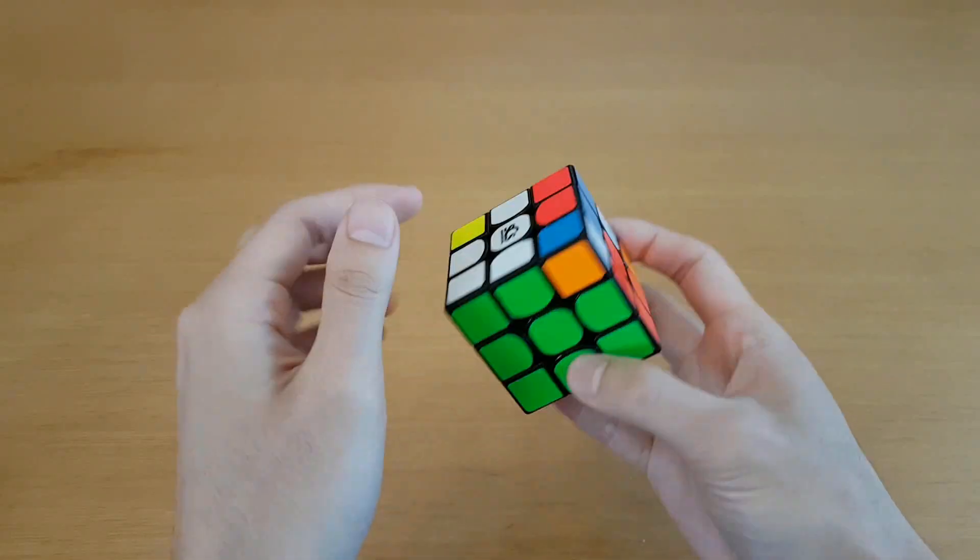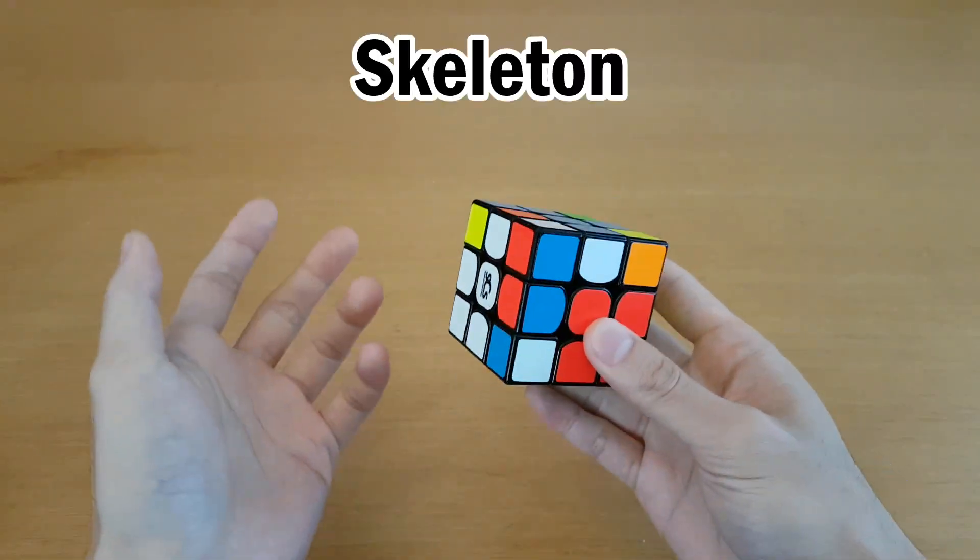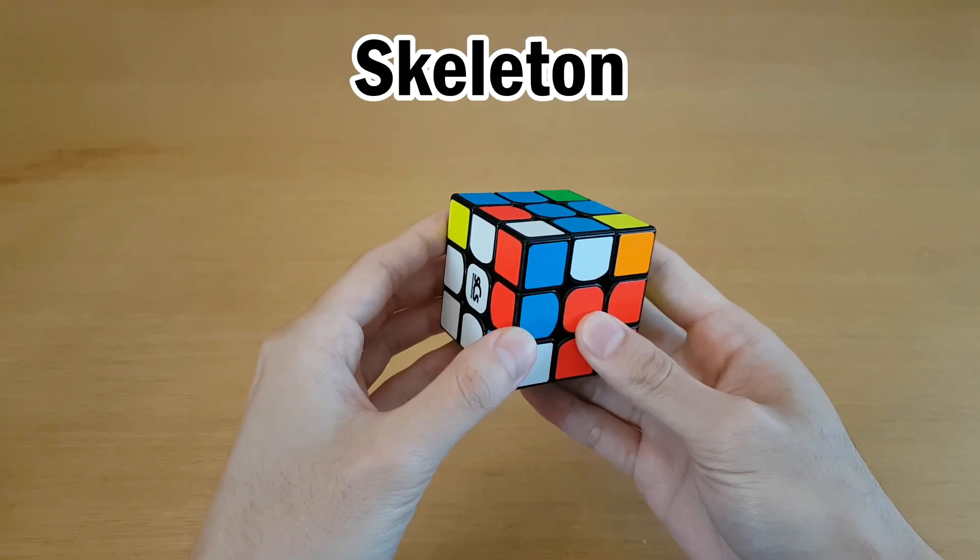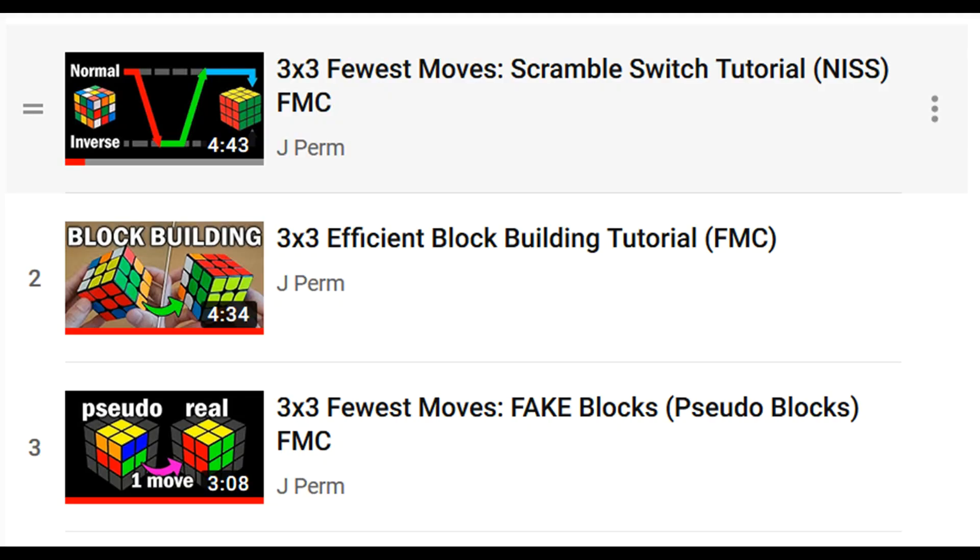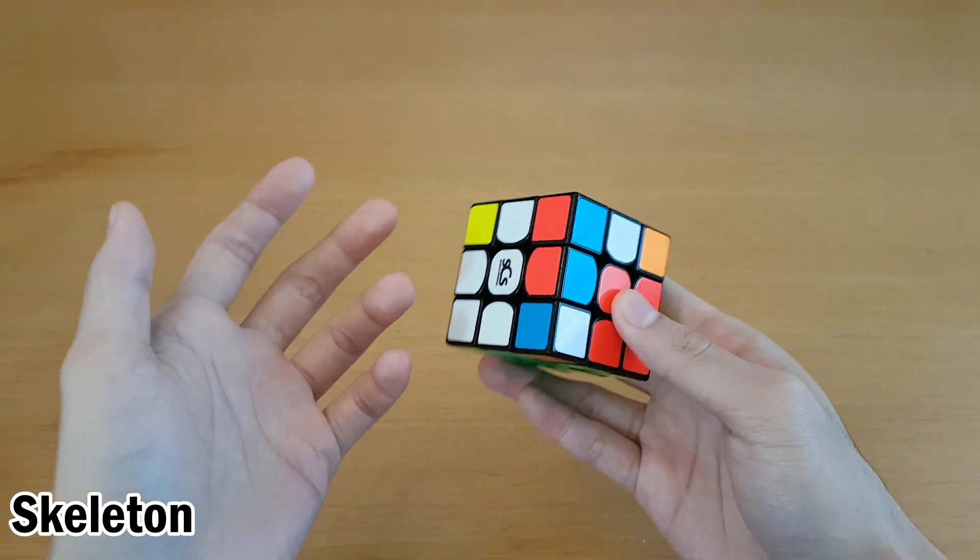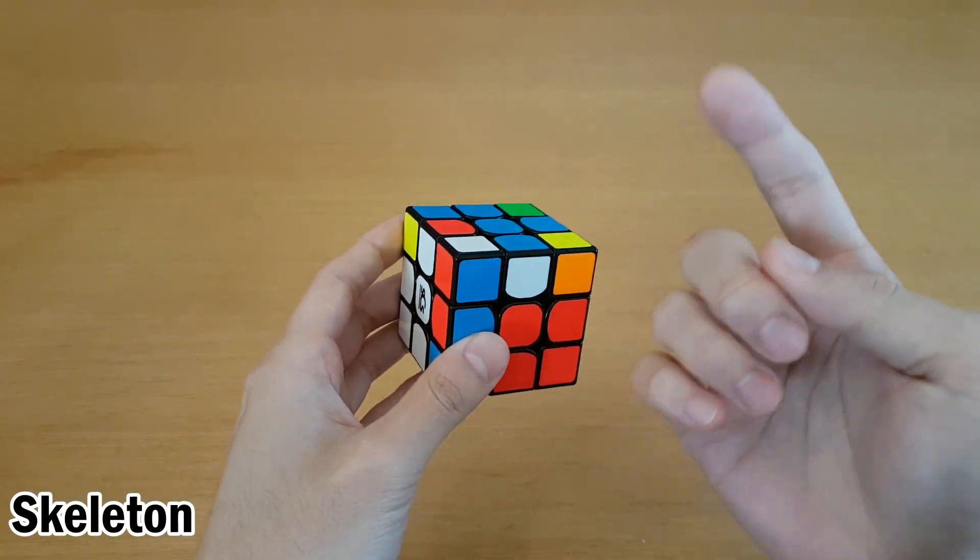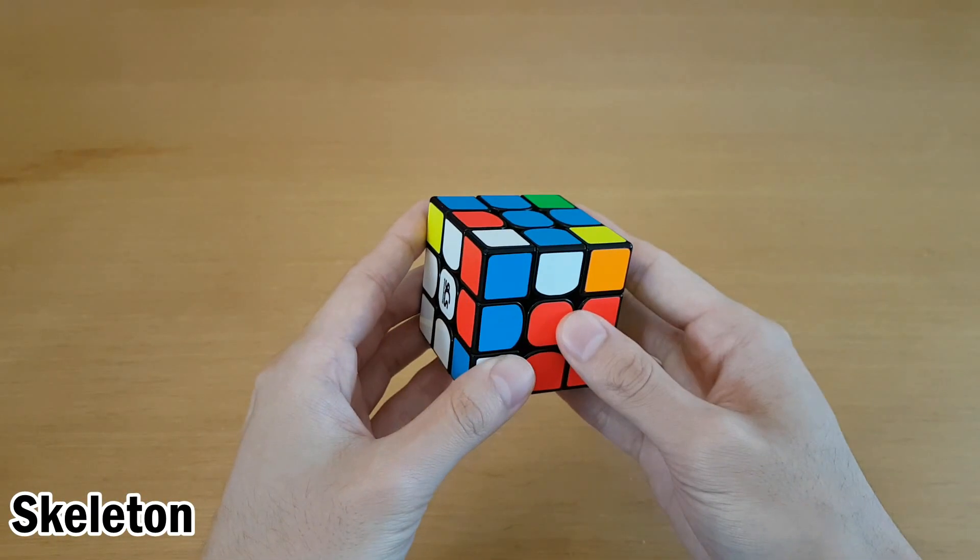In fewest moves, after you solve F2L-1 pair, you want to make a skeleton which solves most of the pieces but not all of them. For F2L-1, you use these techniques to save a lot of moves. For the skeleton, there's a lot of things you can do depending on the scramble, but I'll show you one reliable technique that can work if you don't know what to do.